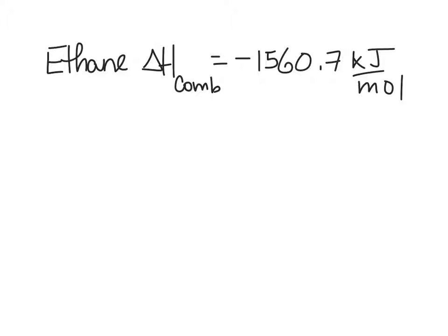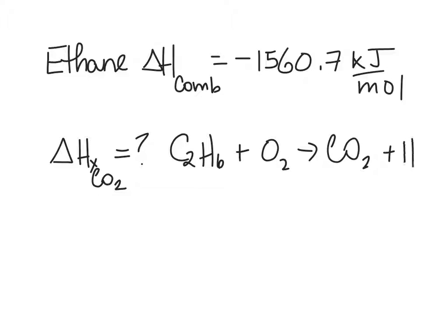If there was a coefficient of two in front of pentane I would have 7000 and then you would have only moles in one place. So, write out the chemical equation for the combustion, the complete combustion of ethane to produce carbon dioxide and liquid water, and then I want you to figure out what the molar enthalpy for the CO2 is.